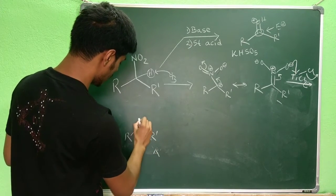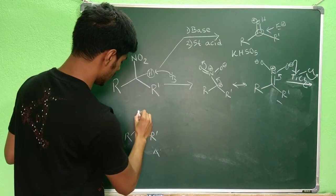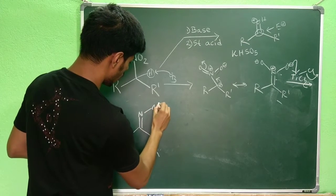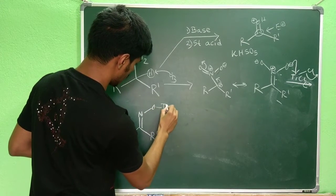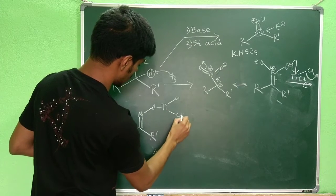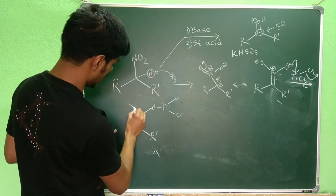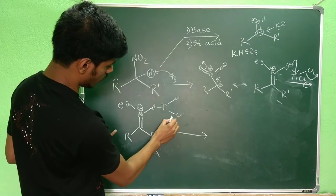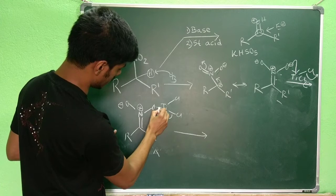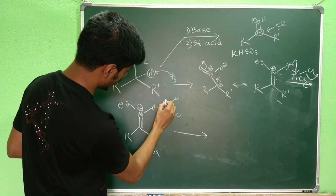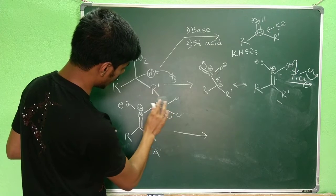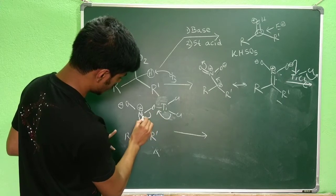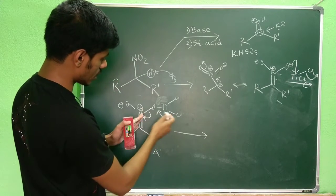In the resulting intermediate you have R and R' groups on the carbon, the nitrogen bearing an O-TiCl2 group and an O-minus. In the next step this N–O bond pushes electrons toward titanium — either through the titanium lone pair or through the Ti–Cl bond — causing this group to depart.